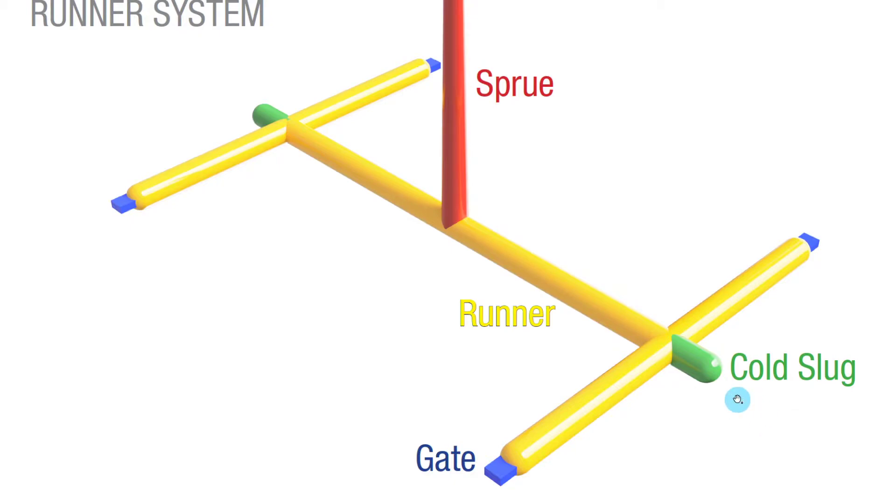As we know, within our runner system, we have our sprue, which brings the plastic from the barrel into the runner. From the runner, the plastic runs into the cold slug before it ends out of the runner and goes into the gate.